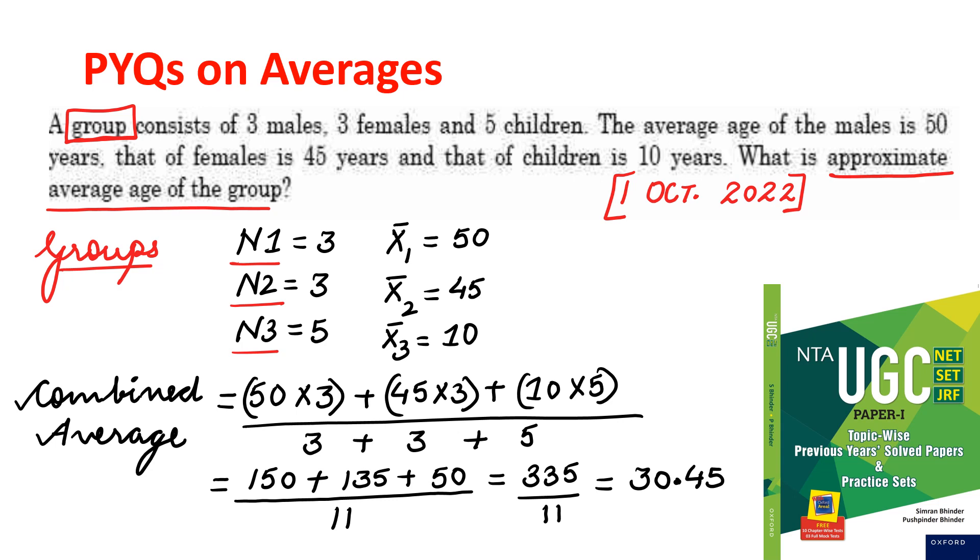So let's read. A group consists of 3 males, 3 females and 5 children. The average age of the males is 50 years. That of females is 45 years. And that of children is 10 years. What is approximate average age of the group? First we have to understand the question carefully and then we have to think which formula should be applied here.